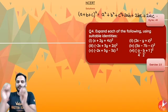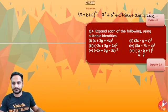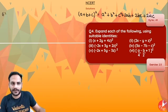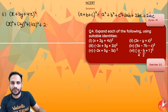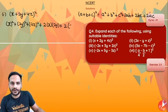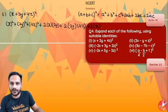The first one is very easy: (x + 2y + 4z)². So I can write it as x² + (2y)² + (4z)² + 2·x·2y + 2·2y·4z + 2·x·4z.